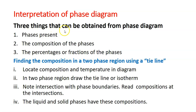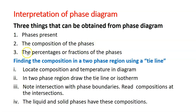There are three things we can obtain from a phase diagram. First, we can determine what phases are present — whether it's just liquid, just solid, or both. Second, we can determine the composition of each phase — the composition of the liquid or the solid. Third, we can work out the weight fractions or percentages of each phase.